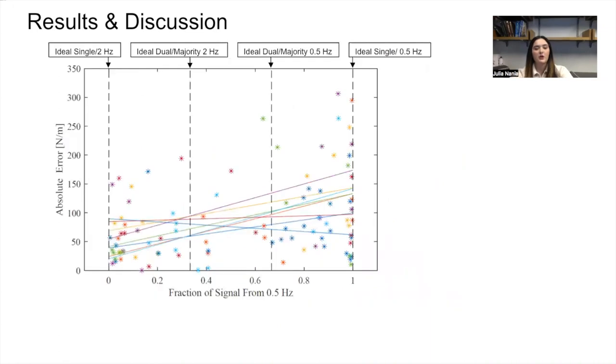Of course, participants do not always track perfectly. In order to account for the influence of these deviations, we examined the stiffness error in relation to the actual ratio that participants achieved between a 0.5 Hz and 2 Hz sinusoid throughout each trial.